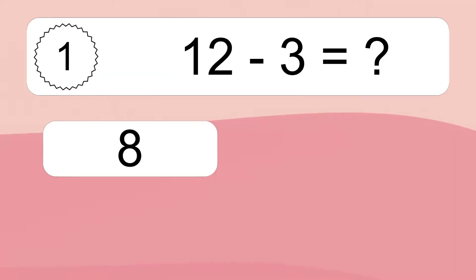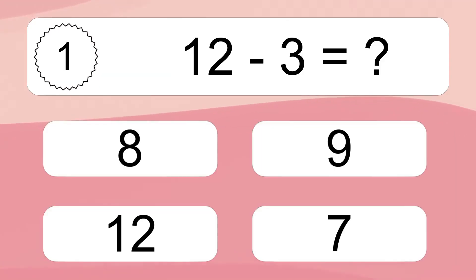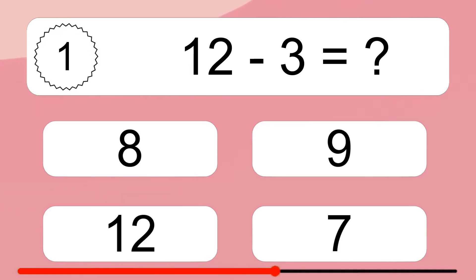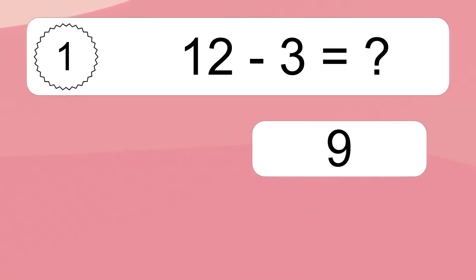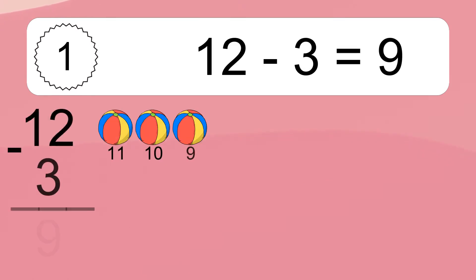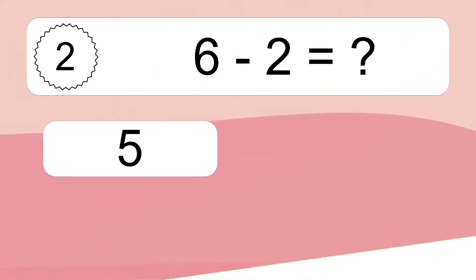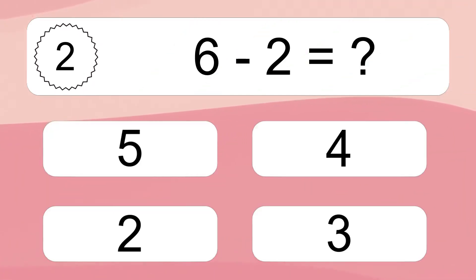12 minus 3 equals what? 12 minus 3 equals 9. Let's count it: 11, 10, 9.